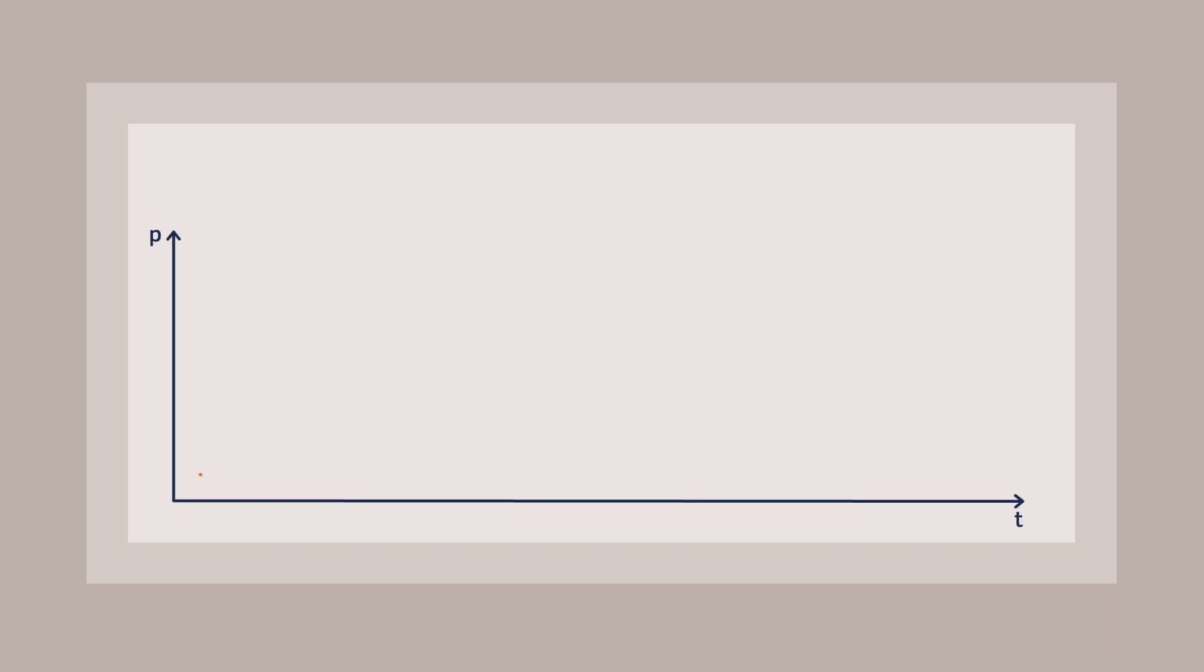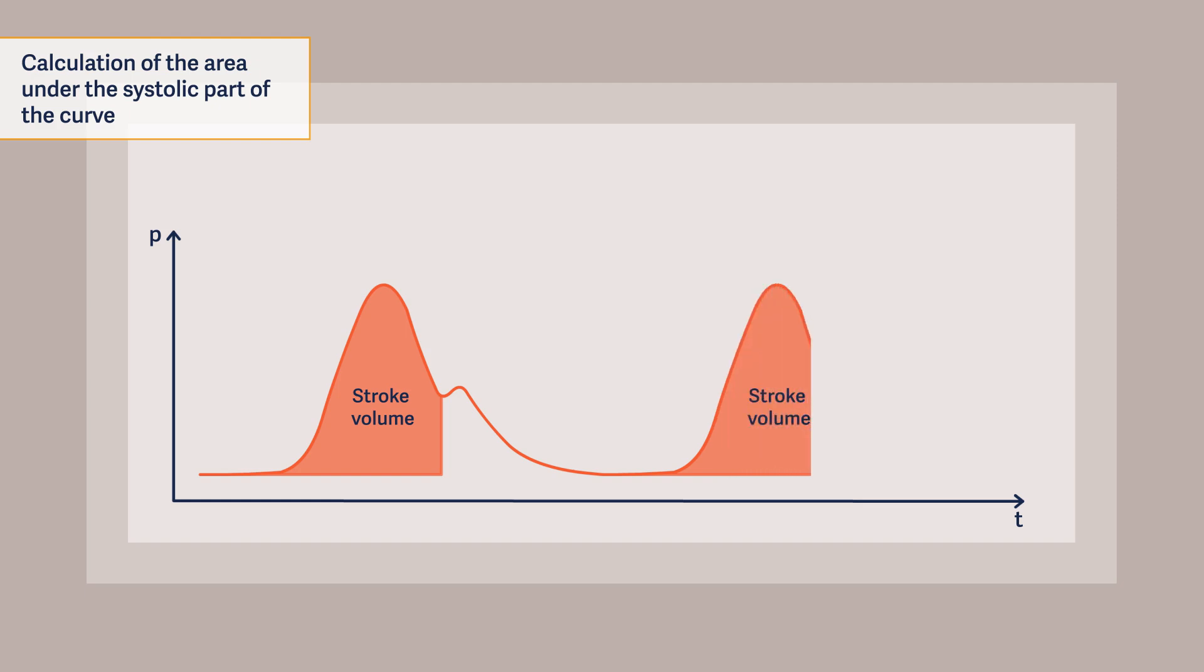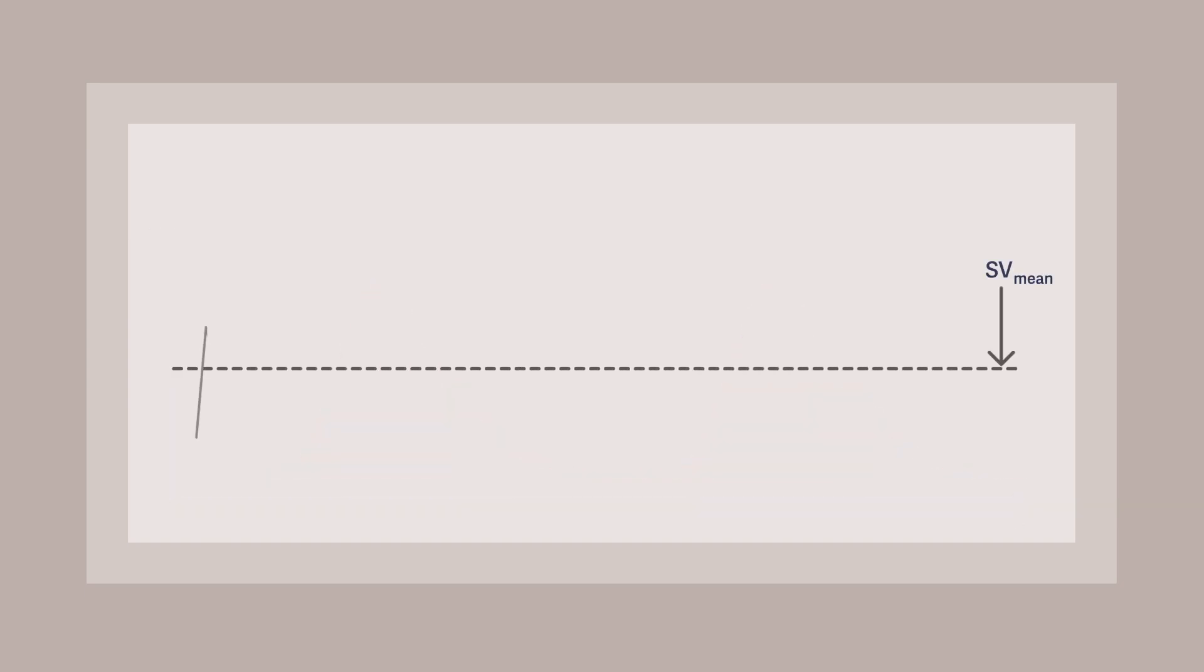The Pulse Contour analysis involves continuous analysis of the derived arterial pressure signal. In the first step, it determines the area under the systolic part of the curve, which reflects the stroke volume. By multiplying the stroke volume with the heart rate, a continuous beat-to-beat cardiac index, or CI, is determined.